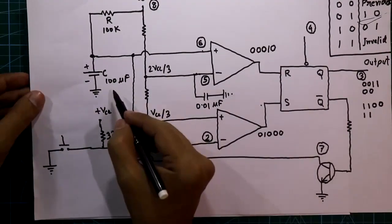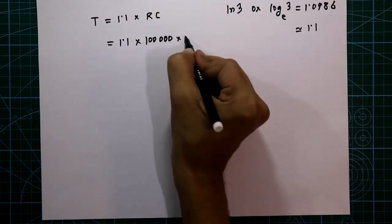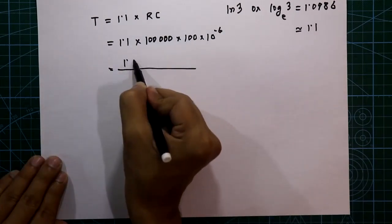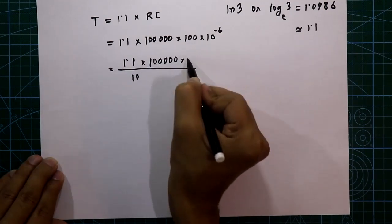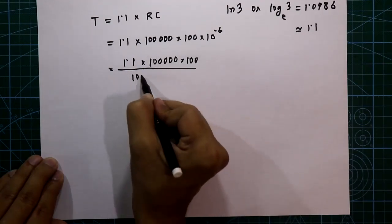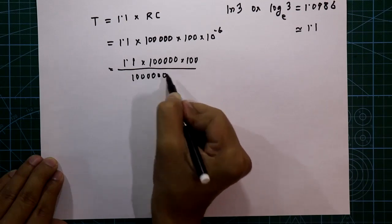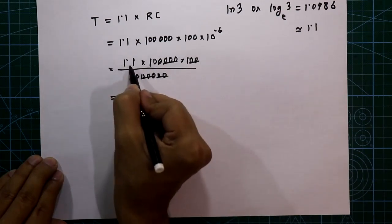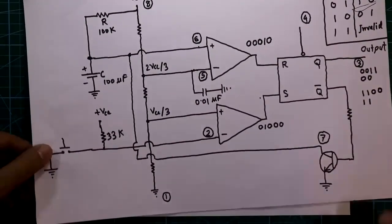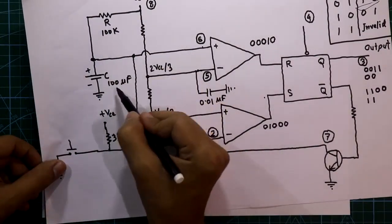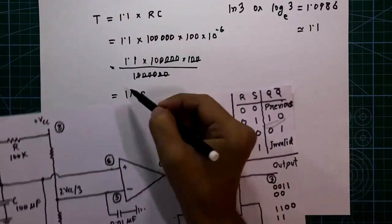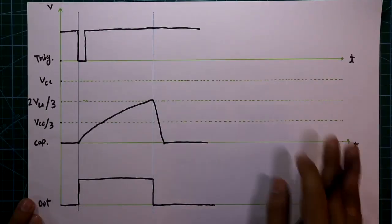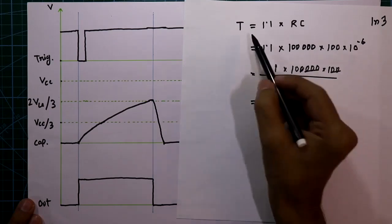The resistor is 100 kilohms and the capacitor is 100 microfarad (100 × 10⁻⁶). So T = 1.1 × 100×10³ × 100×10⁻⁶ = 1.1 × 10 = 11 seconds. With a 100 kilohm resistor and 100 microfarad capacitor, the output time T is 11 seconds.